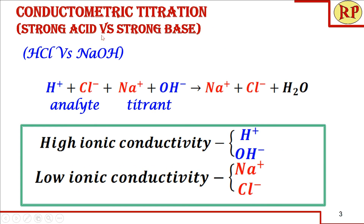We will take an example of strong acid versus strong base. HCl is taken as a strong acid and NaOH as a strong base — both are strong electrolytes, meaning they ionize immediately in solution. We represent HCl as H⁺ and Cl⁻, and NaOH as Na⁺ and OH⁻. HCl is the analyte solution, and NaOH is the titrant filled in the burette. As NaOH is added to the HCl solution, it forms NaCl — also a strong electrolyte — and water, which is non-ionic and does not contribute to any conductance.